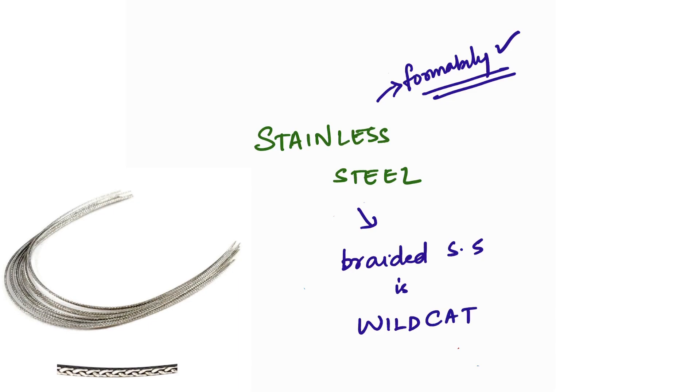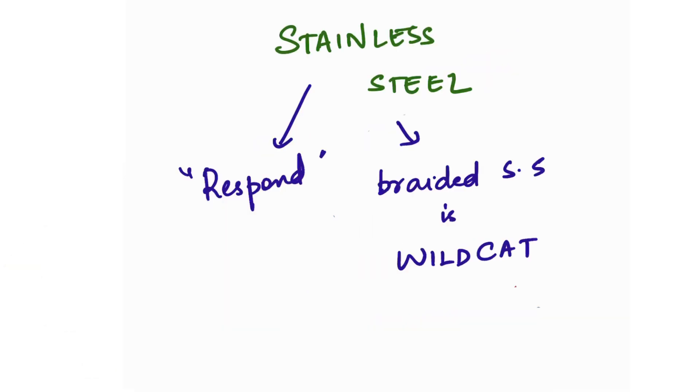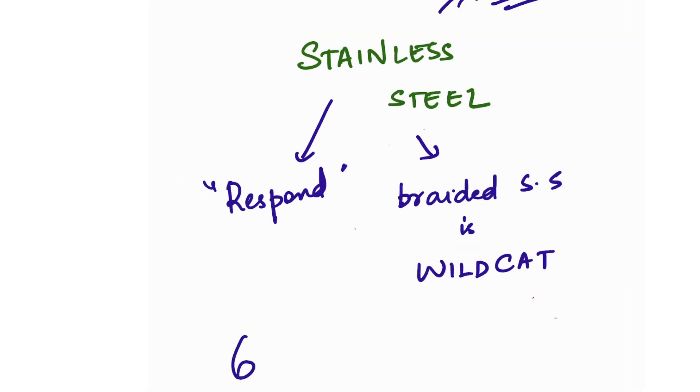Six-stranded super flex braided stainless steel wire is called Supra Flex. This could be a potential MCQ question, so you should know all of these. This is all about stainless steel.